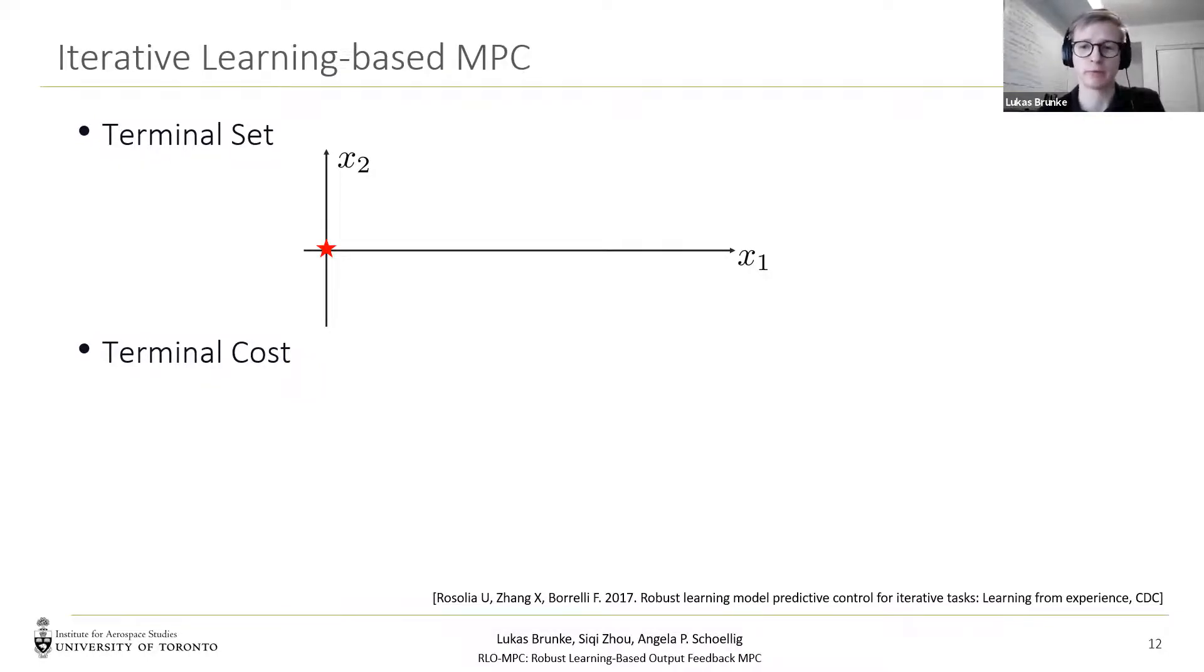So how do we determine the terminal set? Here we have an x1, x2 plot showing a trajectory that stabilizes to the origin, indicated by the star. And this makes use of the fact that a previous successful trajectory defines a controlled invariant set. And also due to the linearity of the system, the convex hull of the trajectory is also a controlled invariant set. And then the safe set is the convex hull of all the visited states.